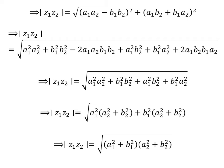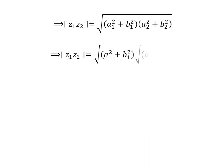Under the square root expression, we get modulus of z1 times z2 is equal to the square root of (a1 squared plus b1 squared) times (a2 squared plus b2 squared). This can be written as a product of two square roots: square root of (a1 squared plus b1 squared) is modulus of z1, and square root of (a2 squared plus b2 squared) is modulus of z2. So modulus of z1 times z2 is equal to modulus of z1 times modulus of z2 — thus proved.